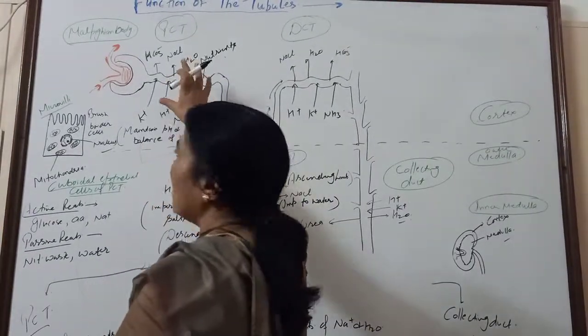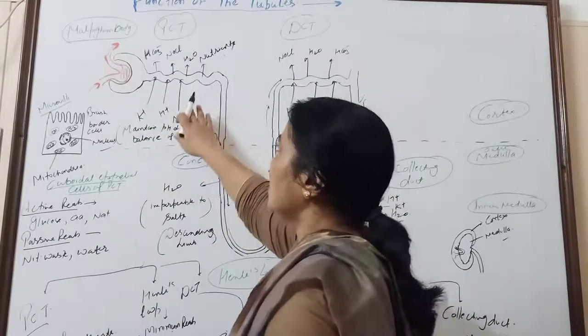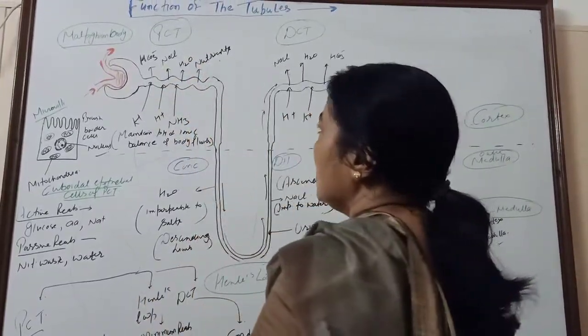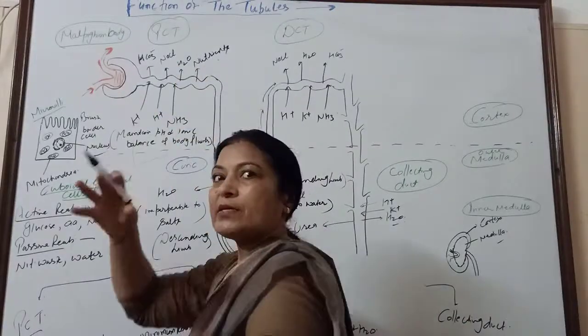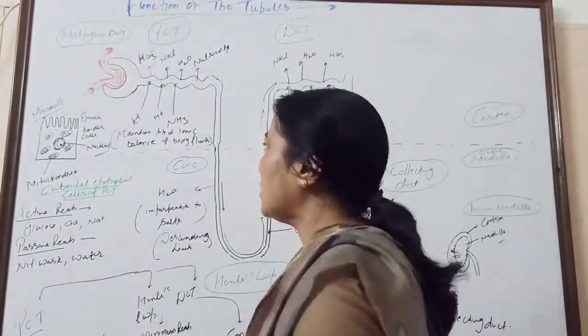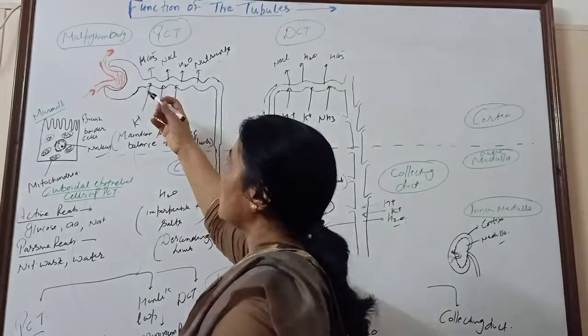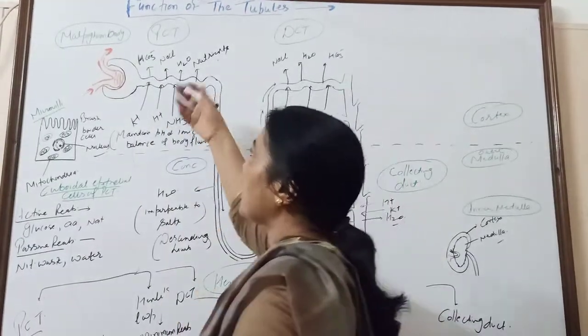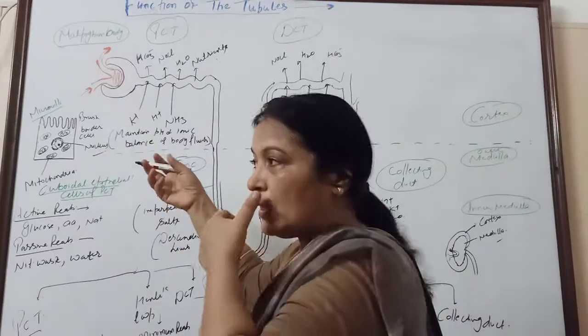The first is PCT. Its main function is reabsorption of nutrients. The nutrients are active and passive. Two types of absorption are associated with this. Active absorption is glucose, amino acids, and sodium. Passive absorption will be water.